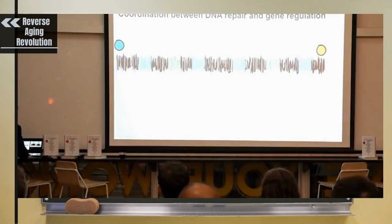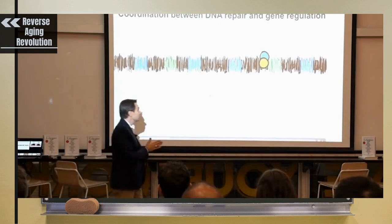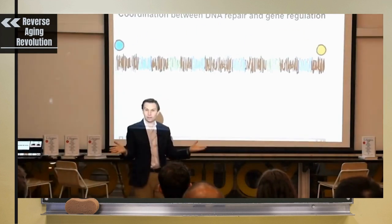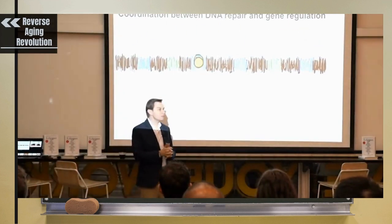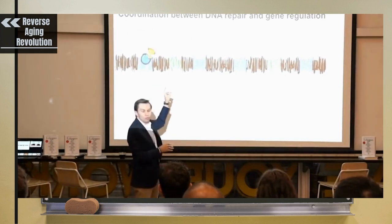All right, I have a movie to show you. So one of the things that happens on the chromosome that disrupts the cell's identity and the ability to read the genes is a broken chromosome.